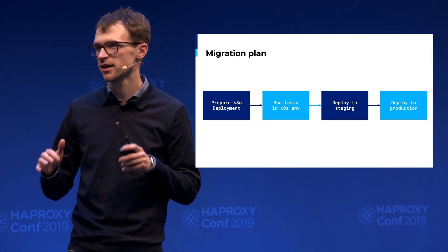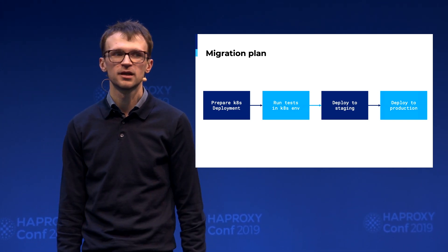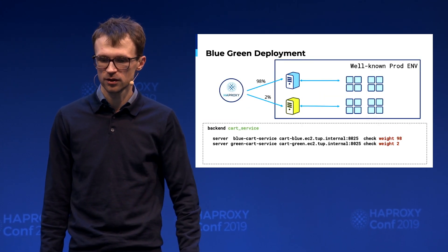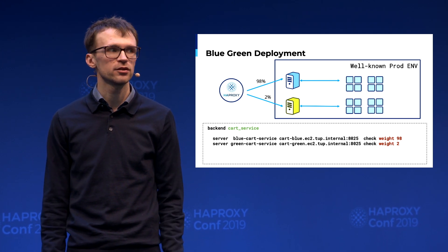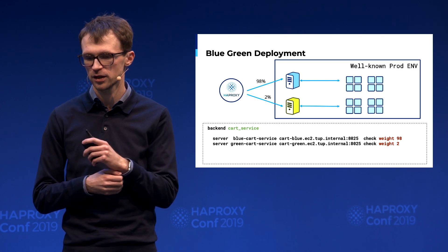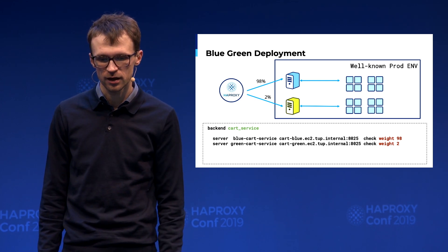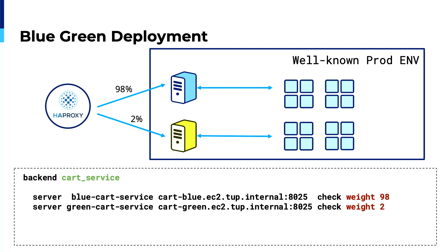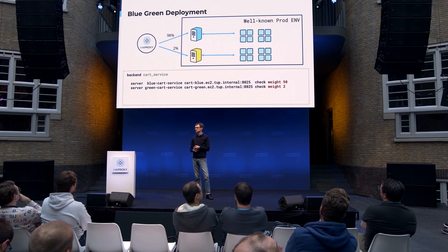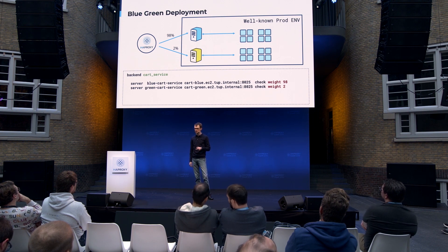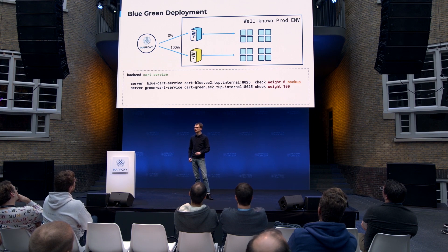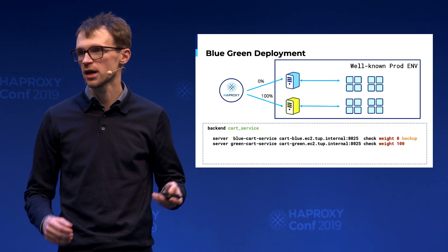Once everything is fixed, you deploy to production. Many are familiar with blue-green deployment, where you route a small percentage of traffic to the new deployment — for example, 2%. Below you can find an HAProxy backend configuration for this. You run tests, analyze logs and errors, and if everything is okay, you switch 100% of traffic. You may also want to keep your old deployment as a backup, using HAProxy's backup option so you can switch back in case something happens.